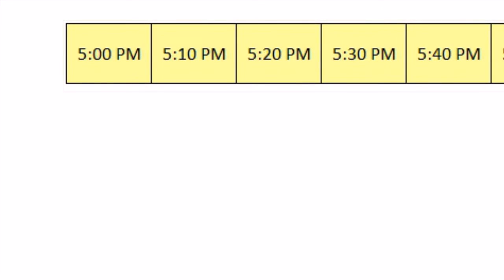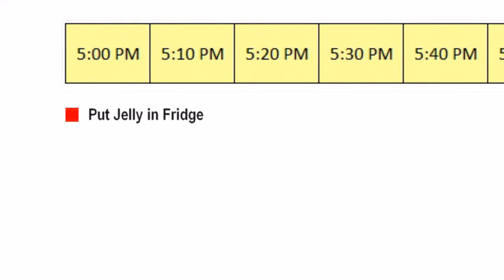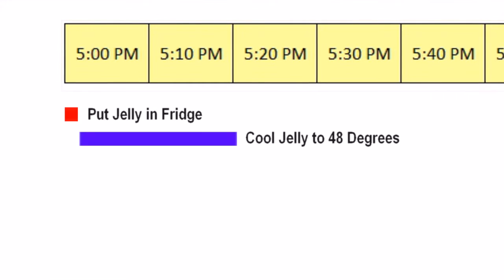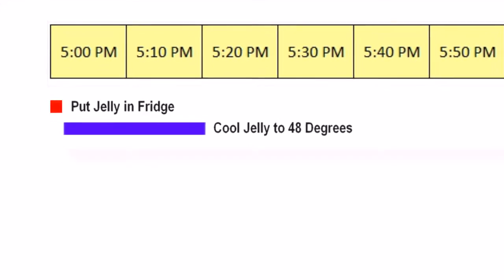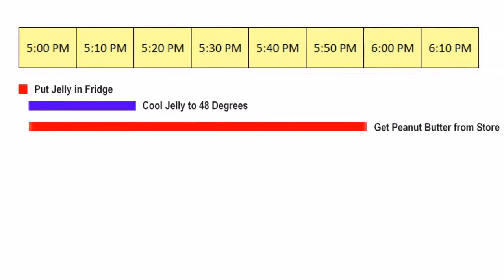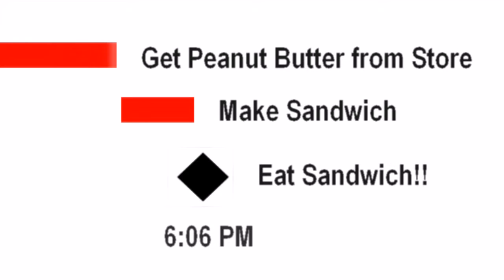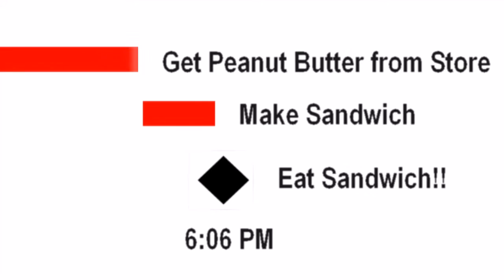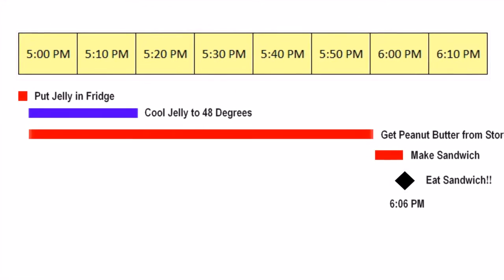Say I immediately put my jelly in the refrigerator at 5 p.m. and it took me one minute to do that. Keep in mind that it's going to take 20 minutes to cool down. After I put my jelly in the refrigerator, I left for the store and it took me one hour to get my peanut butter and then get home. Once I got home, it took me five minutes to make my sandwich, so by the time I'm ready to eat my sandwich, it's 6:06 p.m. That's the one minute for the jelly plus one hour for the peanut butter plus five minutes for making the sandwich.